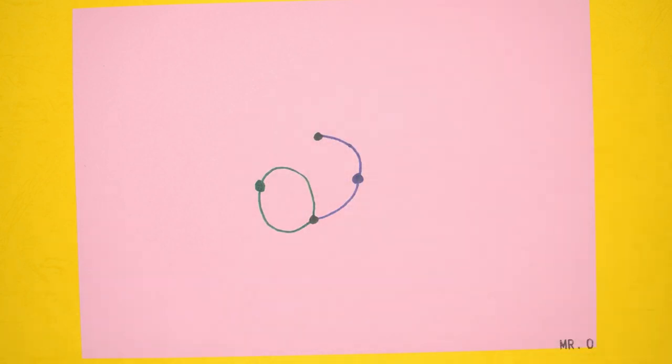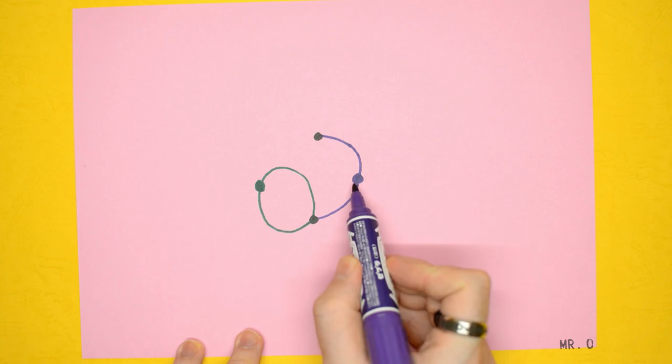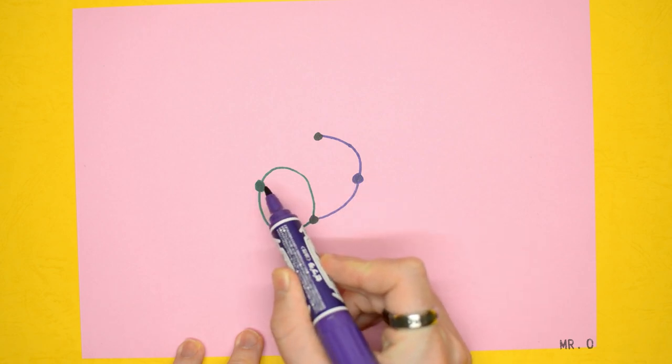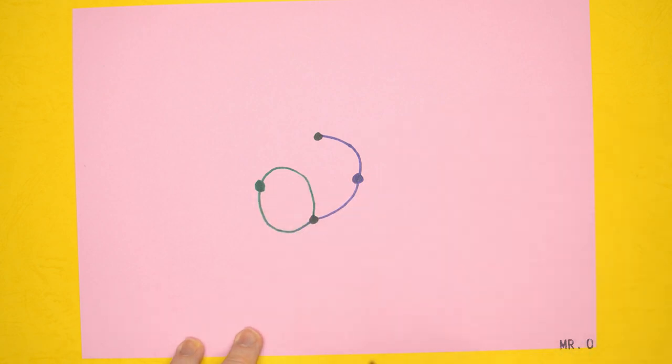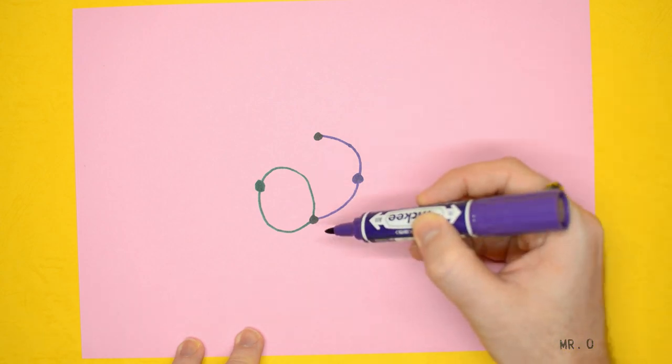The first player goes again. You cannot cross lines, and you cannot have more than three lines for one spot.